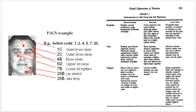Ekman developed FACS to codify these basic emotions based on the movement of different facial muscles. The six basic emotions originally posited by Ekman were happiness, sadness, anger, fear, surprise, and disgust.